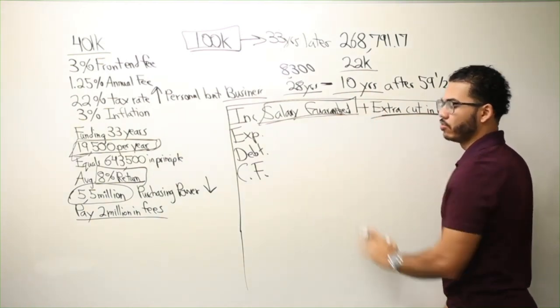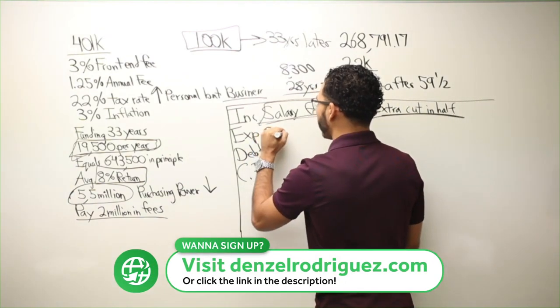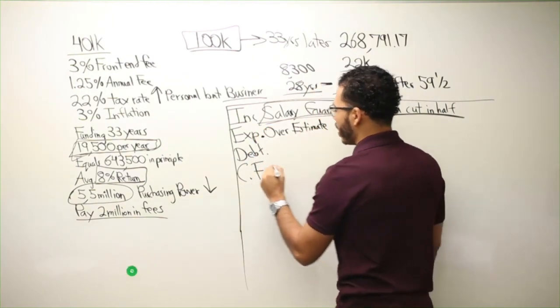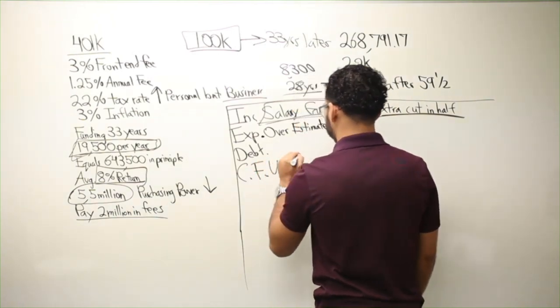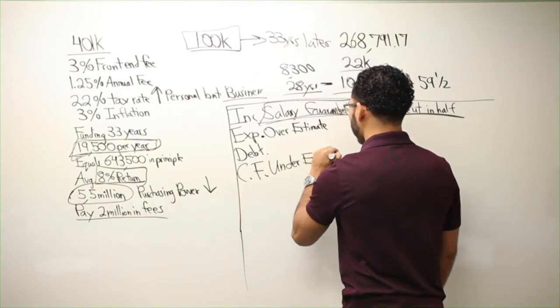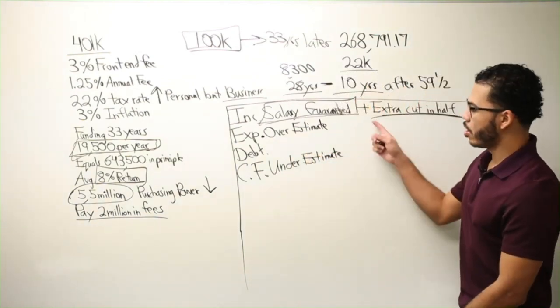don't even count it in velocity banking. With your expenses, overestimate. And with your cash flow, underestimate. So if you know you cash flow two grand a month, call it $1,800. You see how much of